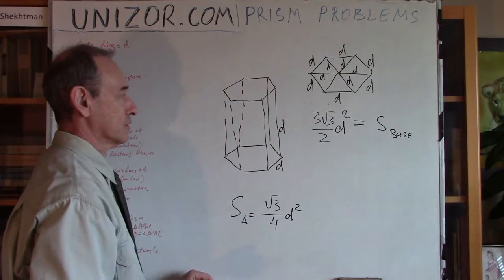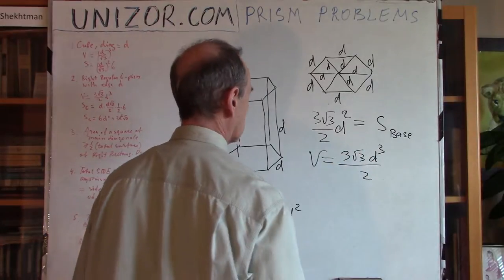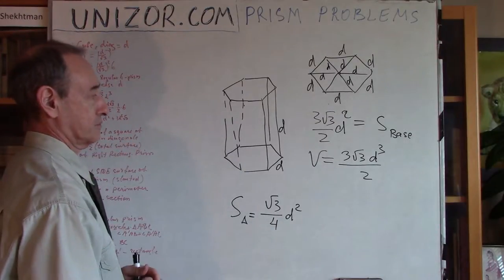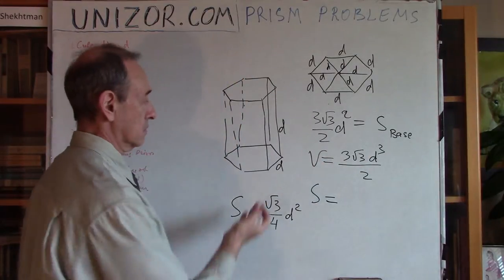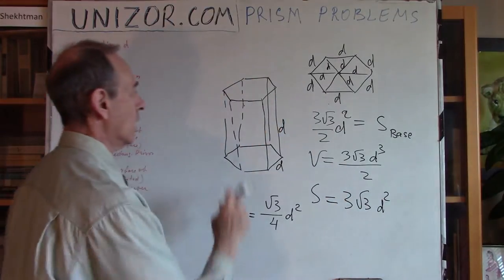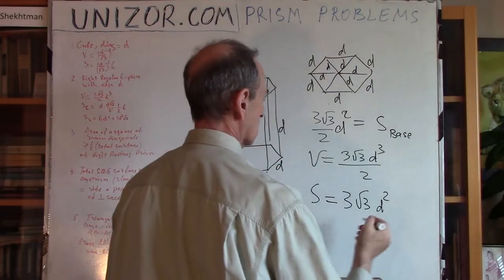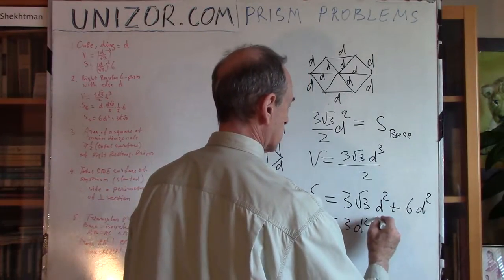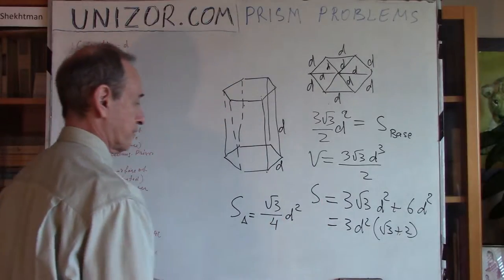The altitude is D, so the volume equals (3√3/2)D³. For the total surface area: two bases give 2 · (3√3/2)D² = 3√3 D², plus 6 rectangular side faces each D by D, giving 6D². Total surface area is 3√3 D² + 6D², or factoring out 3D²: 3D²(√3 + 2).